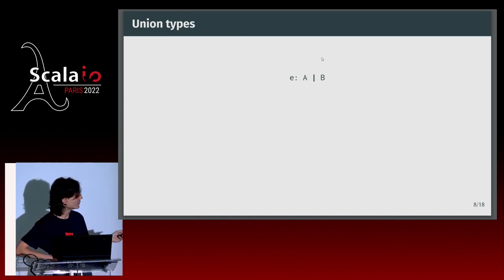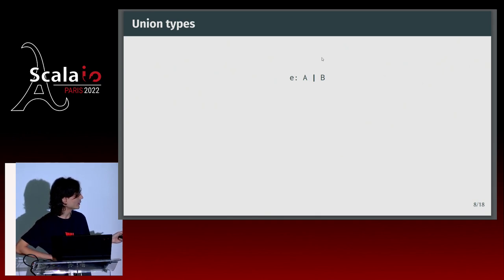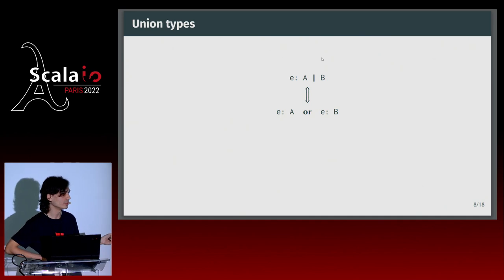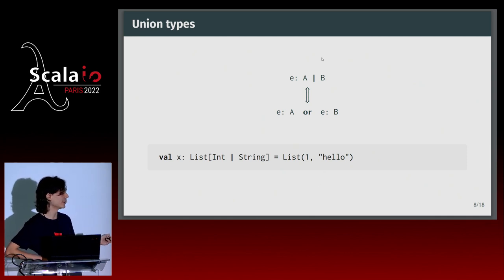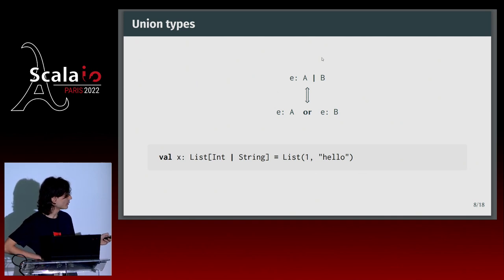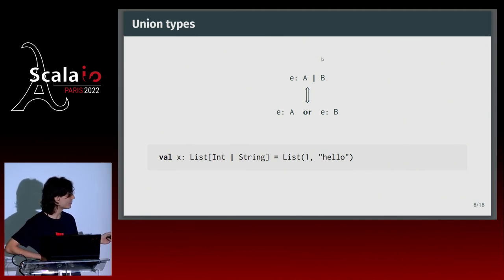Now I'd like to move to another topic: union types, a new feature in Scala 3. Here I have E of type A or B. Union types are like the dual of intersection types — the compiler can say E has type A or B if it knows E has either type A or type B. For example, a list with an int and a string can be typed as List[Int | String]. Or an if-then-else like `if something then 1 else "hello"` can be typed as Int | String.